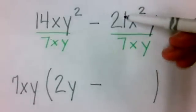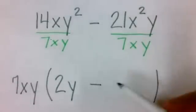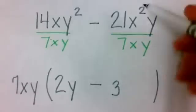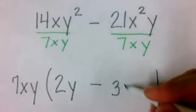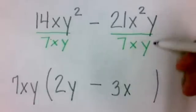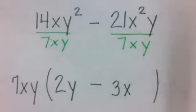Now let's look at the second term. 21 divided by seven would give me three. X to the second divided by x would give me an x. And y divided by y cancels each other out.